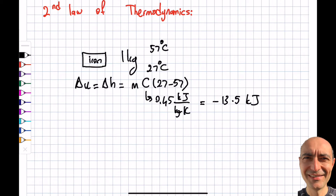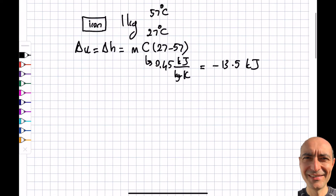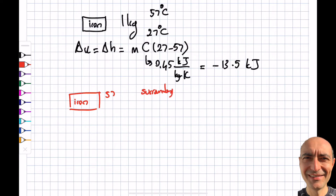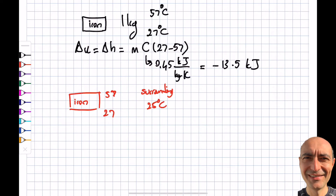What is happening here is: if I leave the iron, it will go from 57°C to 27°C and its internal energy changes by that amount. But is this really possible? If the surrounding temperature is 25°C, then yes — the surrounding is lower than 57°C, so the iron cools down over time. But now the question is: in that same surrounding, if I leave the iron at 27°C, will it spontaneously go up to 57°C?